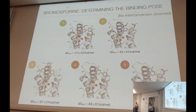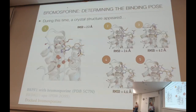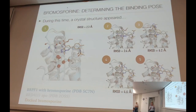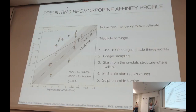As we were doing this work, a crystal structure did actually appear, and we were holding our breath rather nervously. But fortuitously, we got the right answer. This is our best pose compared with the crystal structure for BRPF1 with bromosporin — it's a pretty good overlay, with an RMSD of about 2.3 Å. That gave us pretty good confidence that this approach was likely to be okay. This is the upshot — calculated versus experimental. You can see this is not quite as nice; this is a much harder problem to solve. We're down to a mean absolute error of about 1.7 kcal/mol, with not so good correlation either.